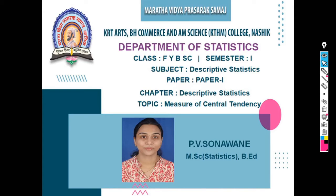Hello everyone, this is our next lecture on the chapter Descriptive Statistics and our topic is measures of central tendency. We already saw three types of measures of central tendency. The first one is arithmetic mean, denoted by x-bar, defined as the ratio of the sum of observations to the total number of observations. Then we saw median.